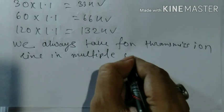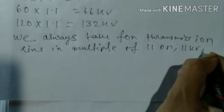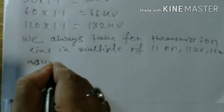So if we consider the distribution loss of 10 percent, we get 11kV, 22kV, 33kV, 66kV, and 132kV - multiples of 11. That's why we always have distribution lines in multiples of 11kV. Thanks for watching my video.